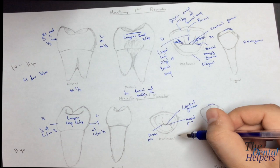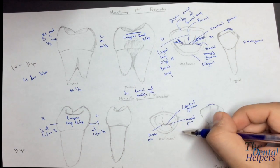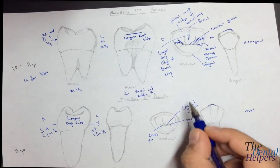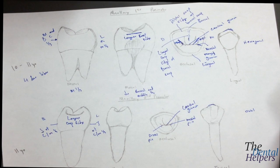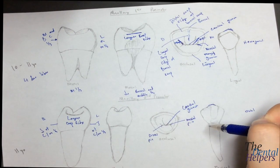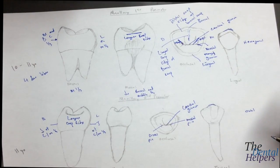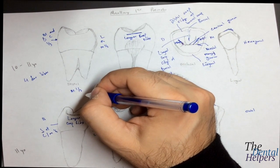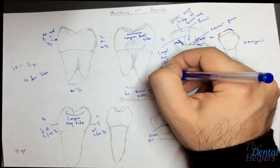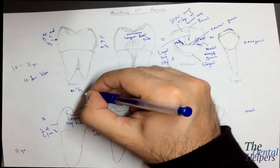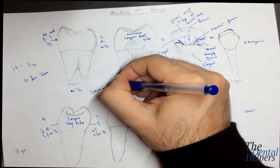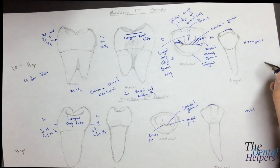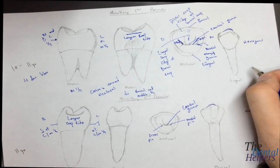In the second premolar, you're not going to commonly see the mesial marginal ridge groove, but you will see the central groove — which is smaller than on the maxillary first. The CEJ on the maxillary second premolars is fairly flat. On the maxillary first, the CEJ on the mesial and distal is convex toward the occlusal, while on the facial and lingual it's concave.